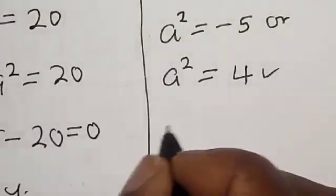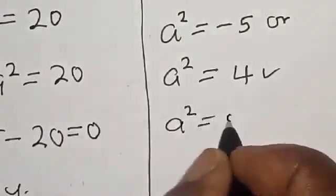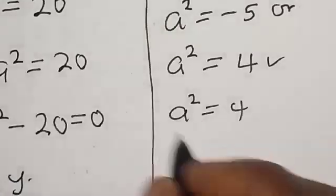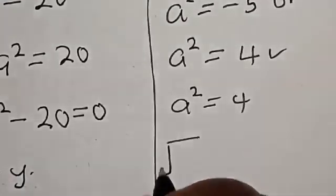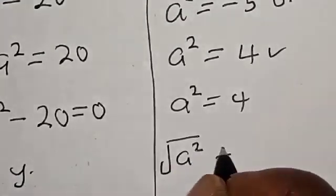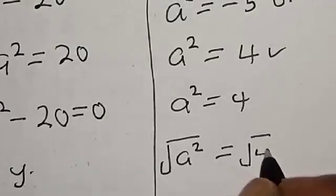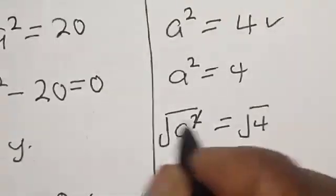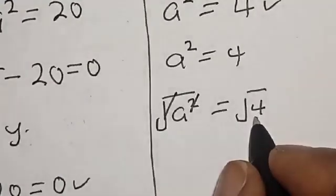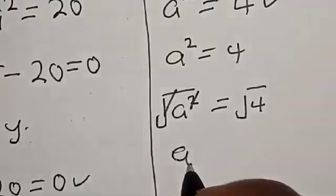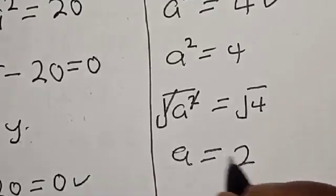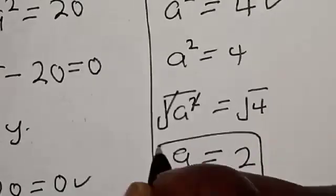From a^2 = 4, taking the square root of both sides: square root of a^2 equals square root of 4. This simplifies to a = 2. That is the value of a.